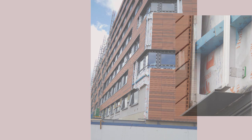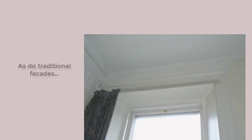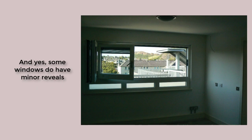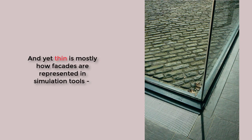Why do we keep going there? And then there are traditional stone and masonry structures. Their depth of 800mm easily includes reveals of 400mm or more and large surface areas with short paths to ambient conditions. And yes, there are facades with minimum internal reveals, and there are facades that are actually thin and aligned on a single plane.